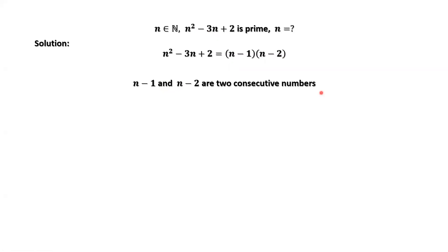This implies n minus 1 or n minus 2 is odd, and the other is even. Therefore, the product n minus 1 times n minus 2 is an even prime.